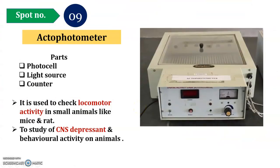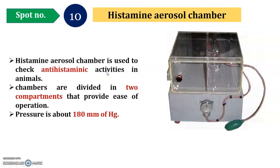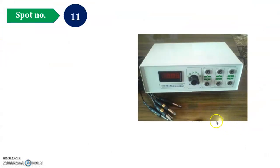The second instrument used in pharmacology and toxicology for second-year diploma pharmacy students, as per the syllabus, is the Actophotometer. It has different parts and is used to check locomotor activities, study CNS stimulation and depression, and observe behavioral activities in animals — this is very important. The next spot, number 10, corresponds to experiment number 23. It is the Histamine Aerosol Chamber, used to study anti-asthmatic and anti-histaminic activity. The chamber has dimensions of around 180 mm; it has a glass body with an air bulb that releases pressure to generate aerosol into the two compartments.